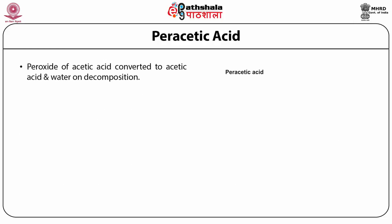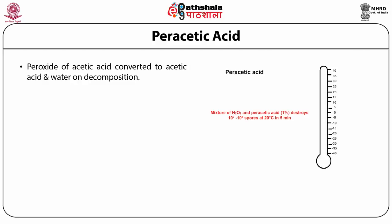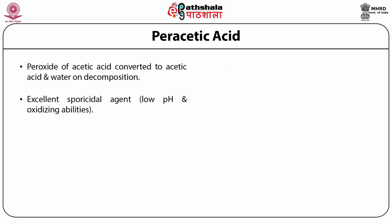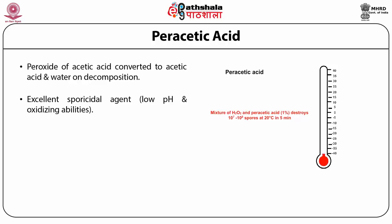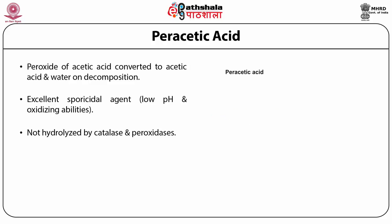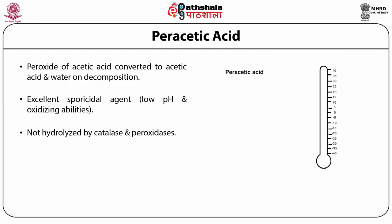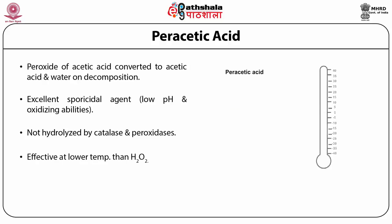Peracetic acid is a peroxide of acetic acid and on decomposition, it is converted into acetic acid and water. Its low pH and oxidizing properties make it an excellent sporicidal agent. It has all the advantages of hydrogen peroxide and it is not hydrolyzed by catalase and peroxidase. It is a liquid sterilant effective against spores of aerobic and anaerobic bacteria at lower temperatures than hydrogen peroxide.